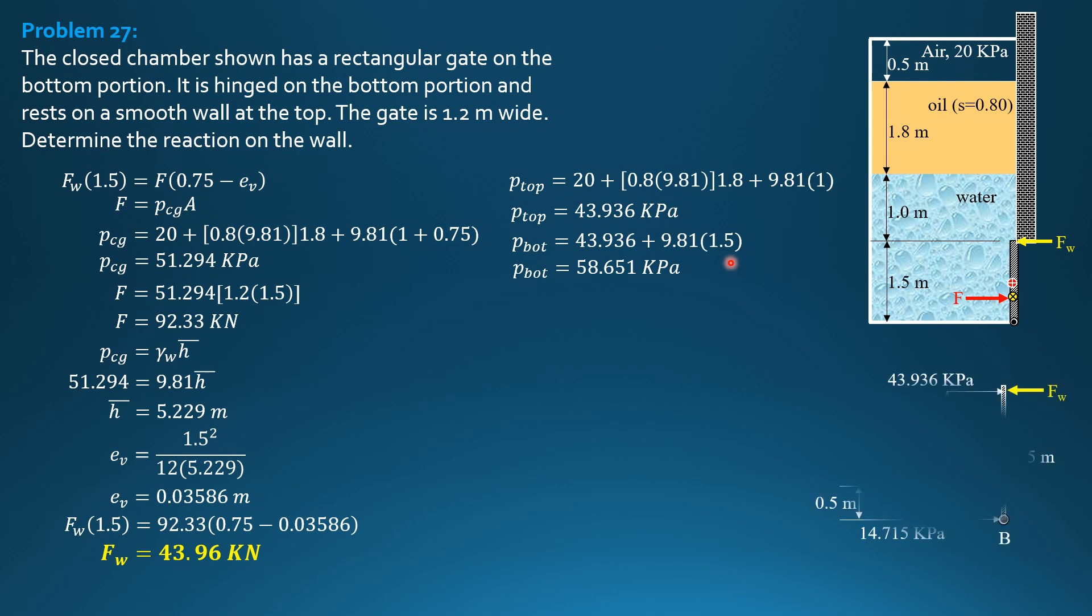So if we draw the gate and the pressure diagram, FW, we still do not show the reactions at the hinge. So we have 43.936 kilopascals rectangular pressure diagram. And we have F2, the value here is 14.715, 43.936 plus 14.715 is 9.81 times 1.5. So that the pressure, total pressure at the bottom is 58.651. So we divide the diagram into rectangle and triangle. So for the rectangle pressure diagram, the distance or moment arm of F1 from the bottom is 0.75, half of 1.5. While the distance of F2 represented by this triangular pressure diagram is 1 third of 1.5. So that's why this is 0.5.